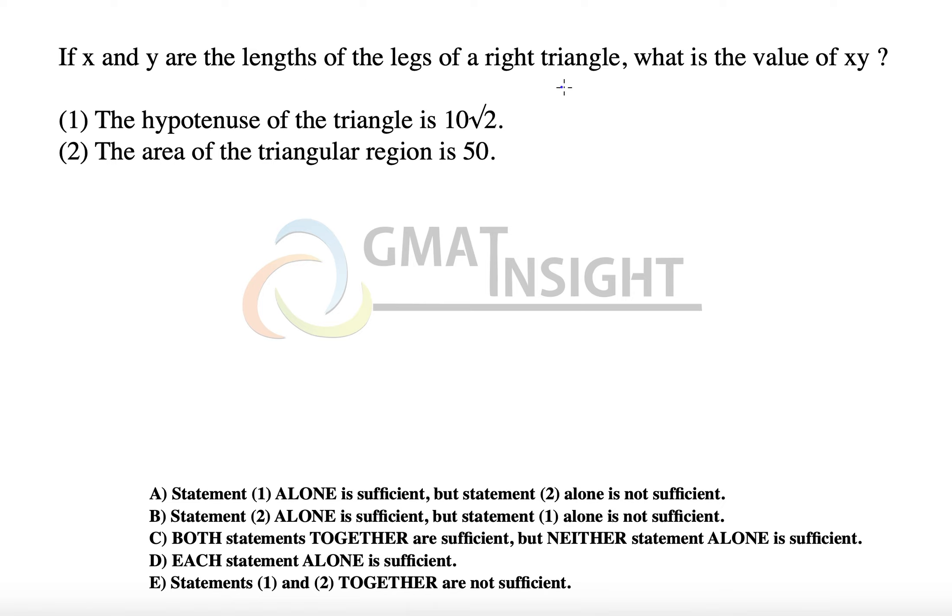If x and y are the lengths of the legs of a right triangle, let's quickly draw the figure. We have a right triangle with legs a and b. Let's call them a, b. The right angle is here.